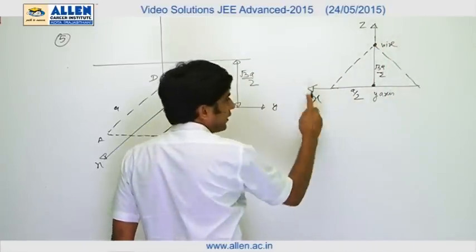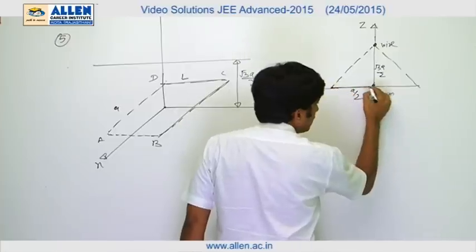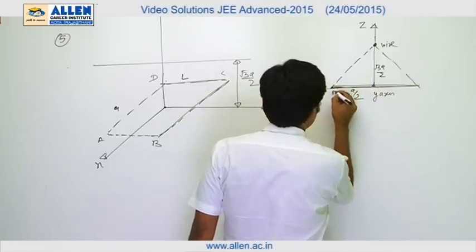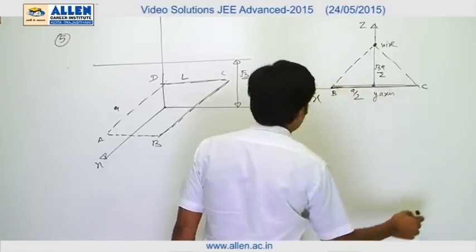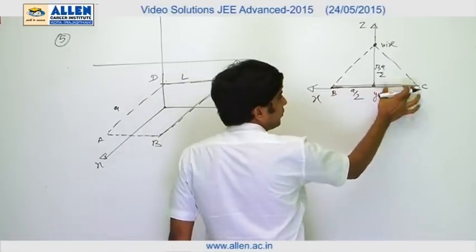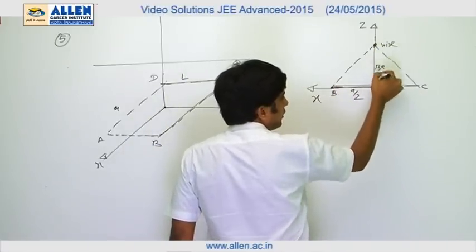Now this is the loop, and this length is, I think, BC. So this length will be a by 2, and this will be also a by 2. This height is root 3 a by 2.